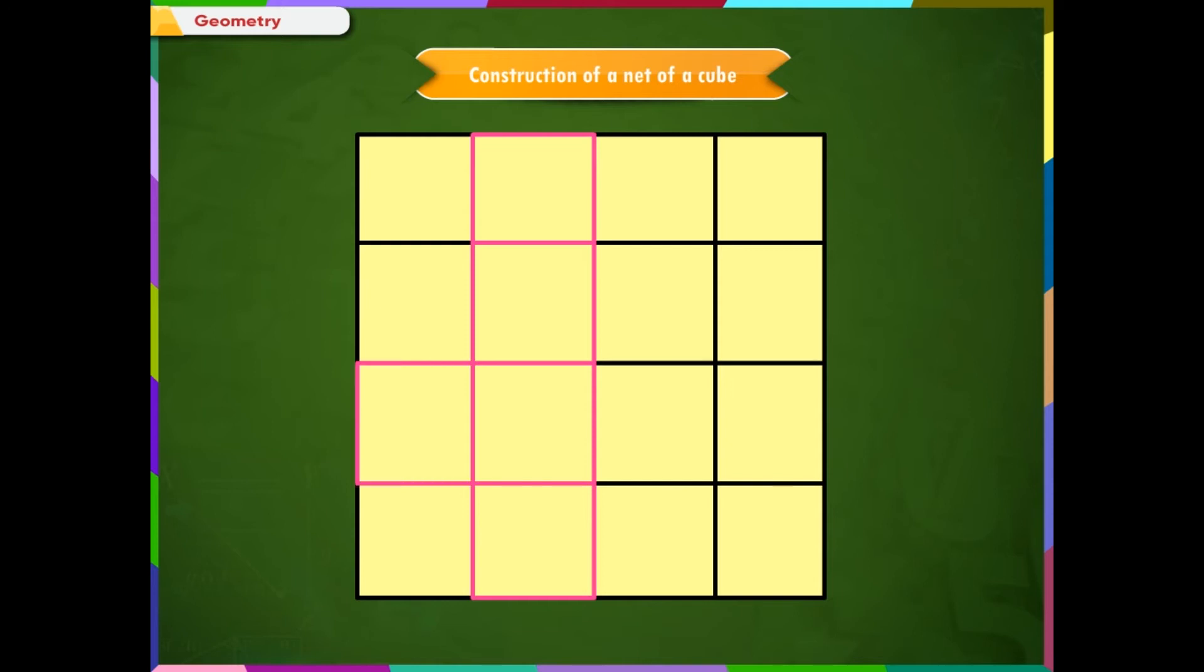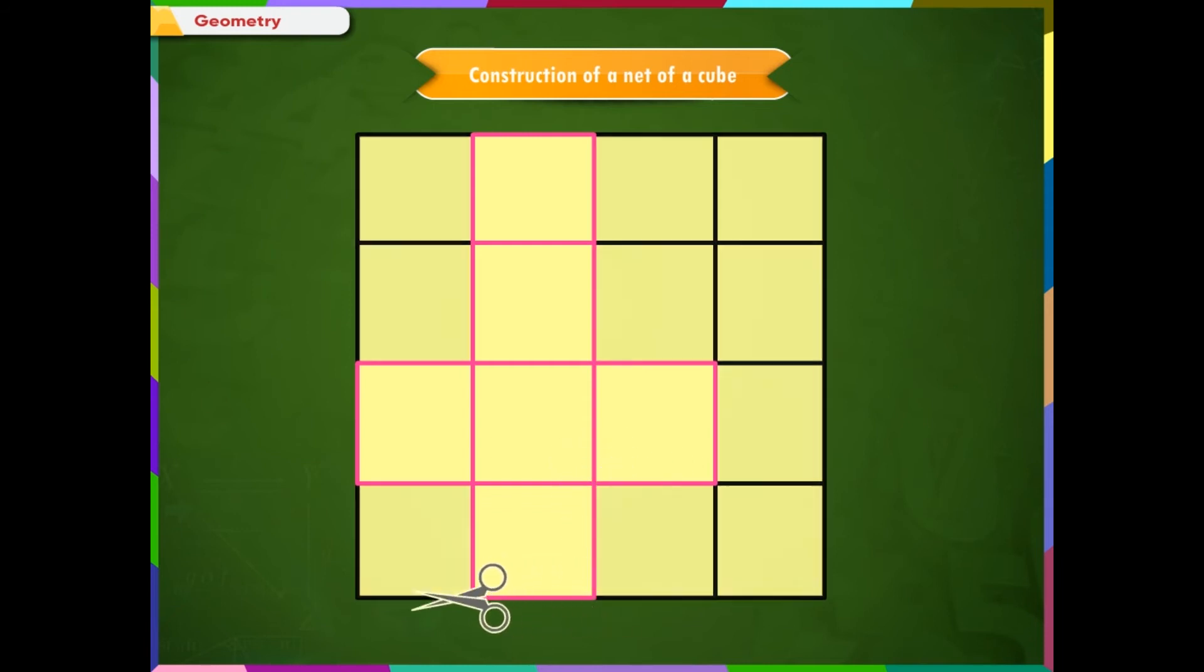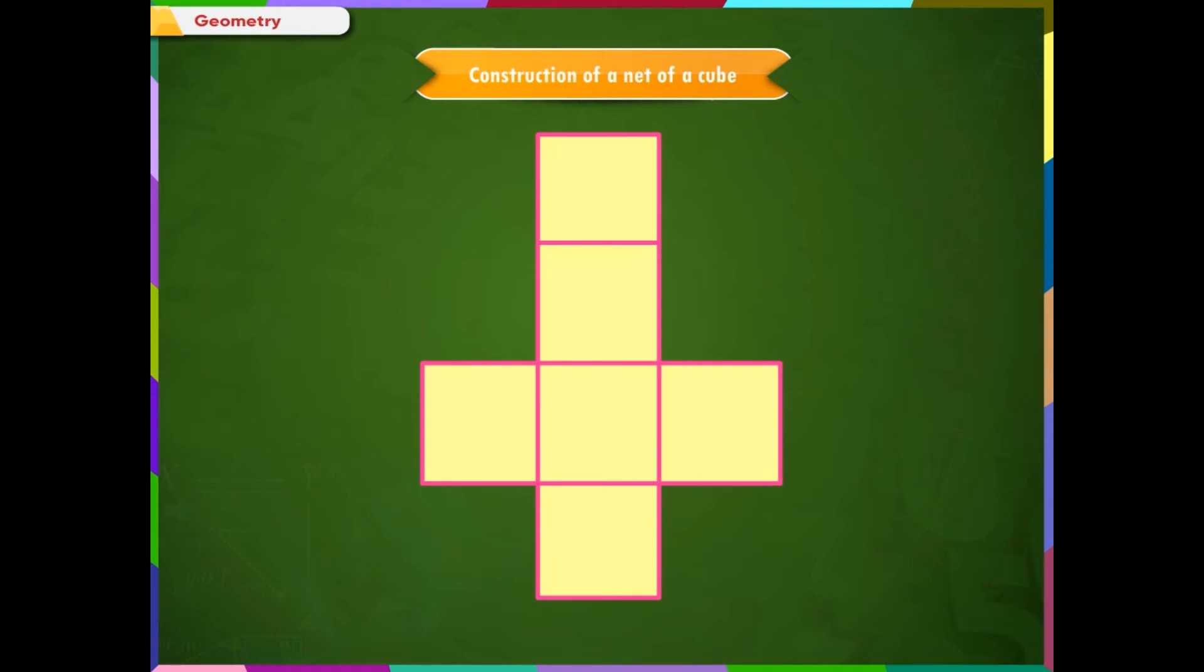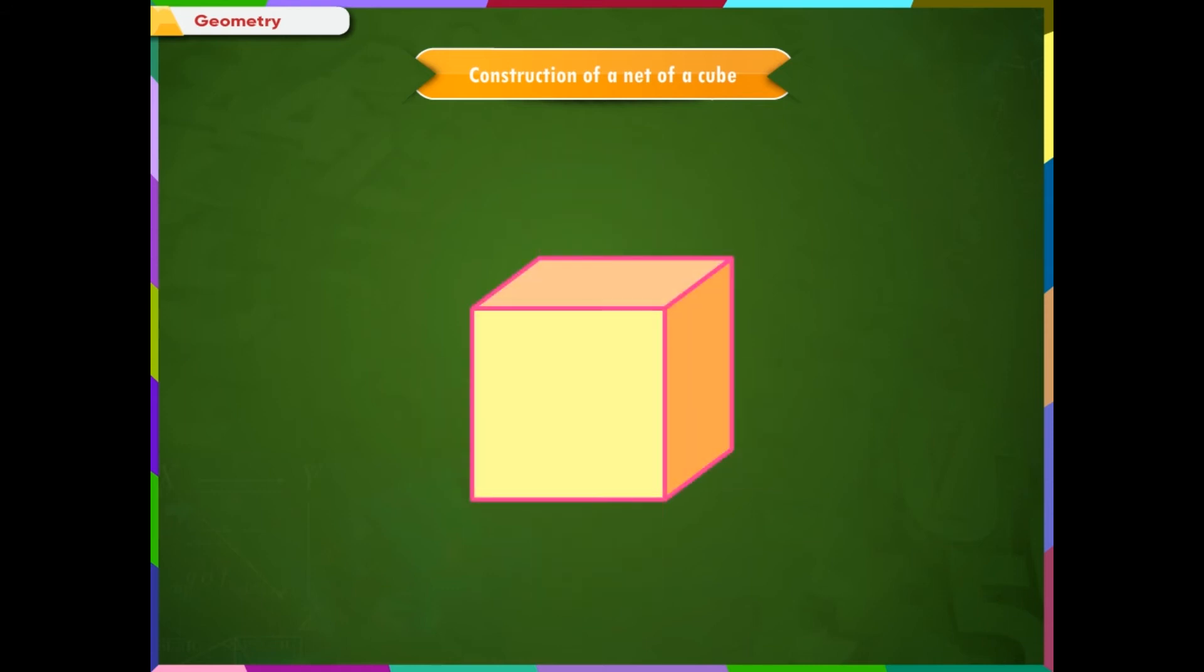Now consider the left and the right face of the cube and draw these on two sides of the first square. Next, cut the graph sheet along the boundary line. The net of a cube is ready. This two-dimensional pattern of a three-dimensional figure can be folded to form the cube.